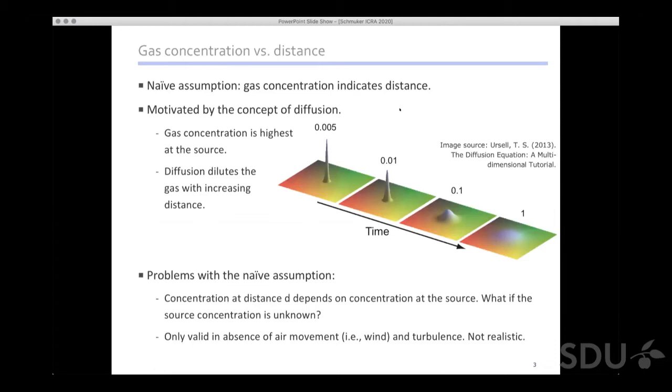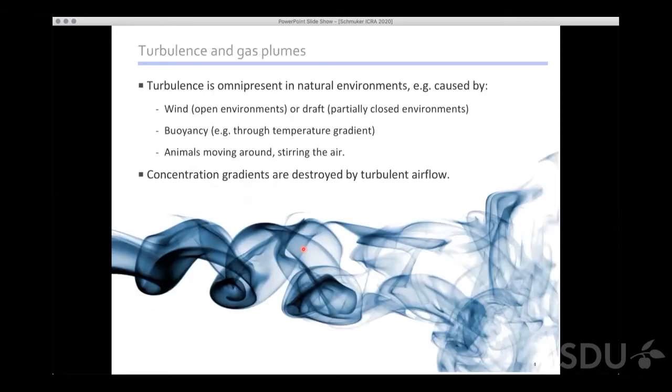Naively, one would say that's very easy - to find the gas source we just move up a nice concentration gradient that develops when we release gas at a point source. This is motivated by the concept of diffusion. The problem with this assumption is the concentration at distance depends on the concentration at the source. You can't estimate the distance, and it's only valid in the absence of air movement and turbulence, which is totally not realistic.